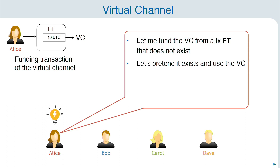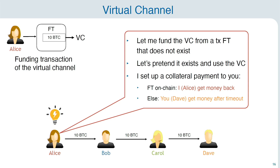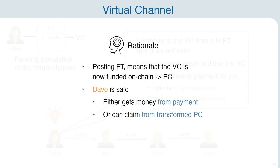In order to ensure that Dave doesn't lose any money — because he does not have any control over the funding of the virtual channel — Alice sets up a collateral payment to Dave such that if the funding transaction goes on-chain, then Alice will get the money back from this payment. If the funding transaction does not go on-chain, then the payment goes through to Dave. So either way, Dave will be safe. The rationale is that posting this funding transaction is essentially the same as transforming the virtual channel to a payment channel, so then Dave can simply claim the money. If Alice does not do this, Dave is compensated from the payment.